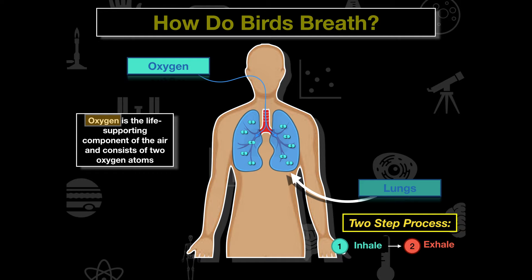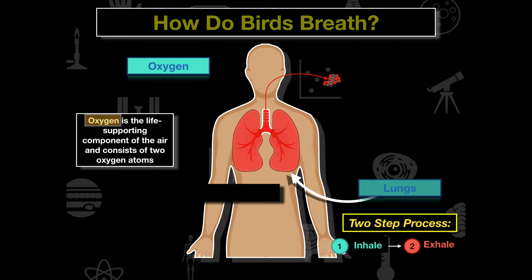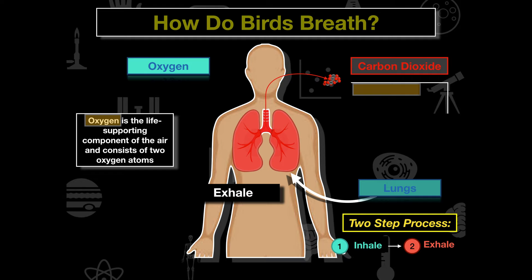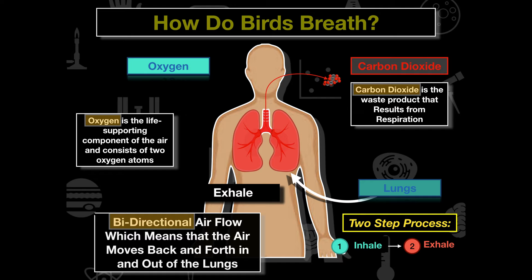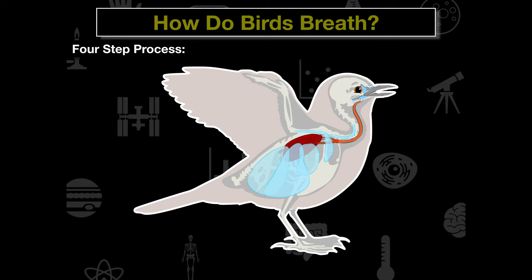The oxygen is then transported via the bloodstream, and our mitochondria convert it into energy using the food we consume. The byproduct of cellular respiration is carbon dioxide, which is transported back into the lungs and exhaled up the trachea into the atmosphere. We call this process bidirectional — the airflow moves back and forth through the lungs: inhale in, exhale out.